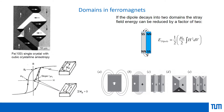A real example is iron: a (100) single crystal with cubic crystalline anisotropy. You can identify regions where domains are 90 degrees apart — for instance, magnetization pointing upward in one domain and left-to-right in another. There are also 180-degree domains where adjacent domains point in opposite directions. These are simple examples, but domain structures can be much more complicated with different angles.